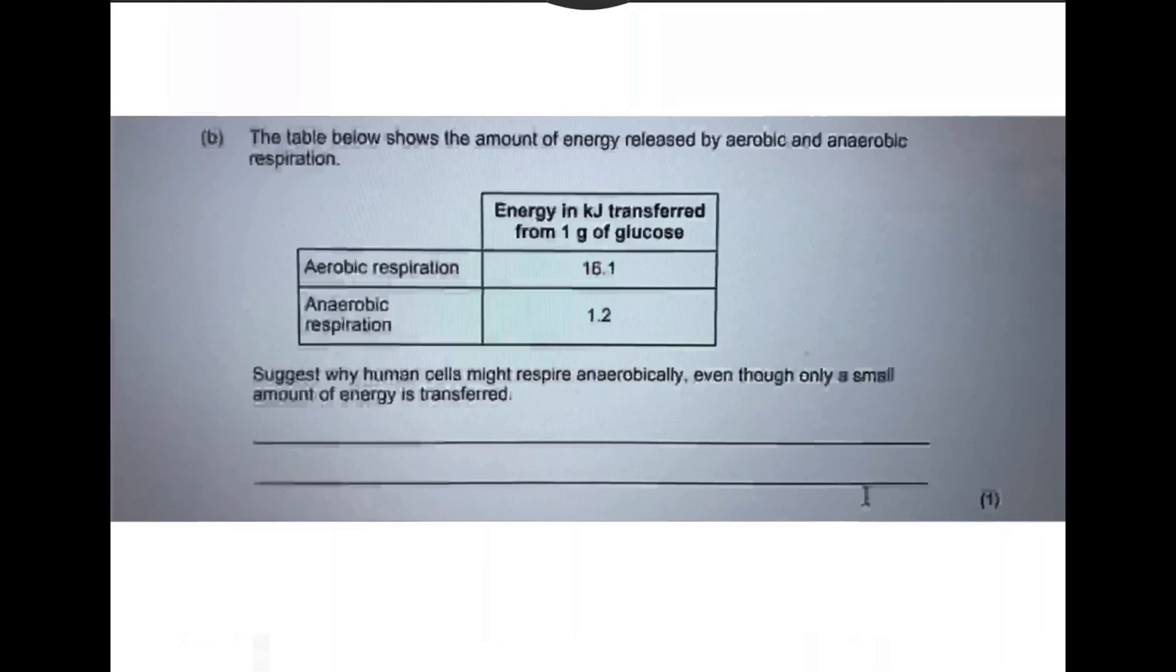Okay, the table below shows the amount of energy released by aerobic and anaerobic respiration. So for aerobic respiration, we can see it produces 16.1 kilojoules of energy for one gram of glucose, whereas anaerobic respiration produces 1.2 kilojoules of energy for one gram of glucose.